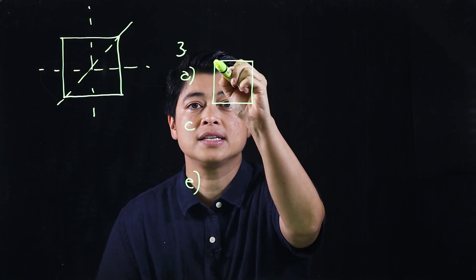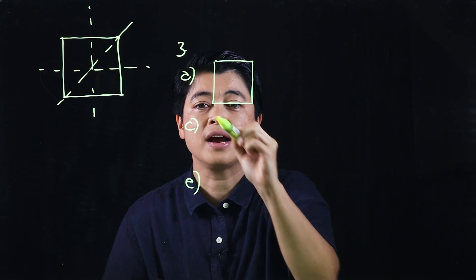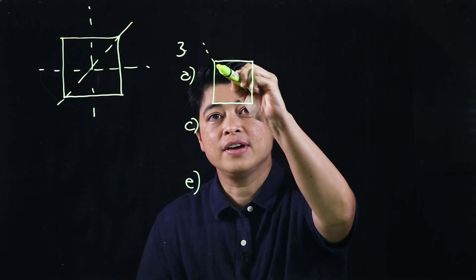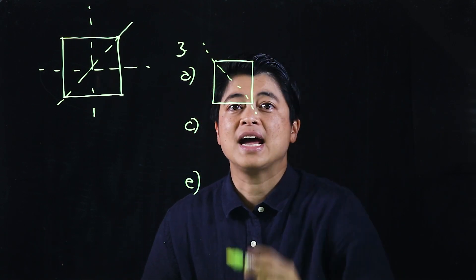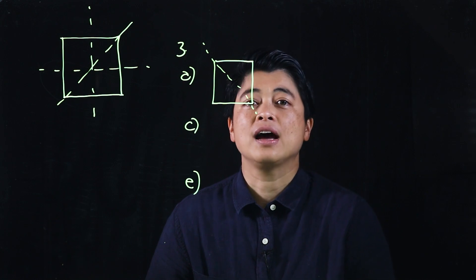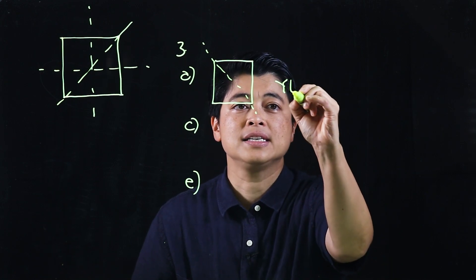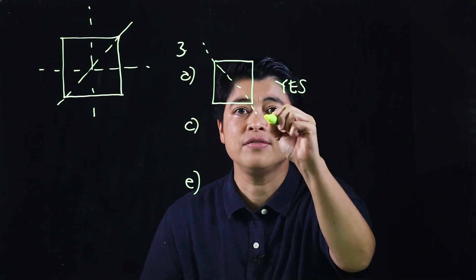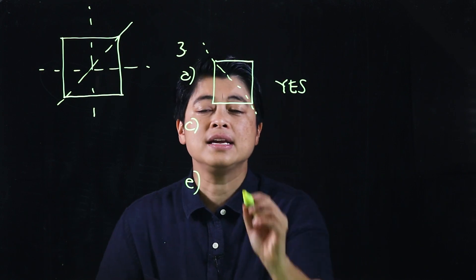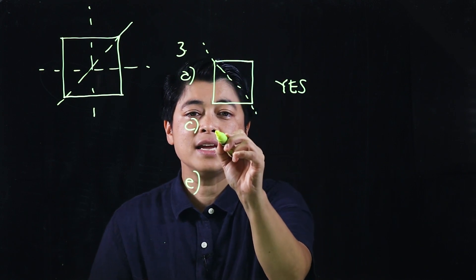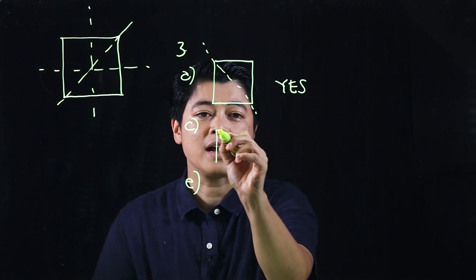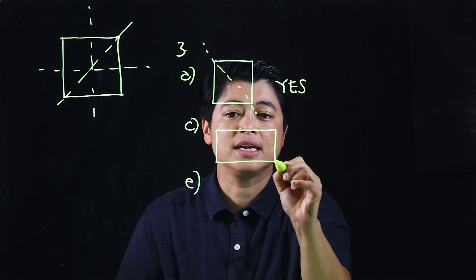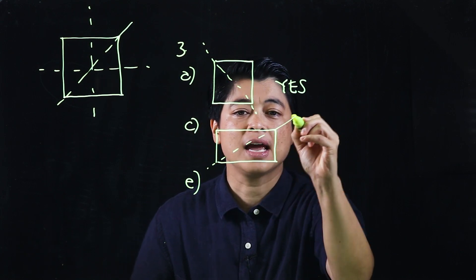The first one, A, is a square. As I discussed, a square is symmetric even when folded diagonally, so the answer is yes — that dotted line is a line of symmetry.